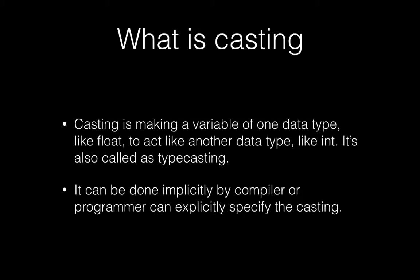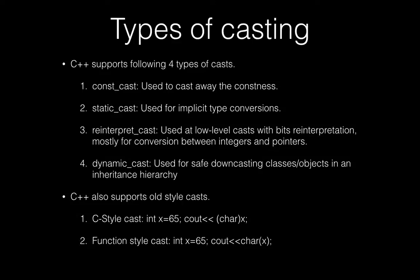Casting can be done implicitly by the compiler, or a programmer can explicitly specify the casting to convert a variable of one data type into another. Now let's see what are the types of casting — C++ supports four types of cast.